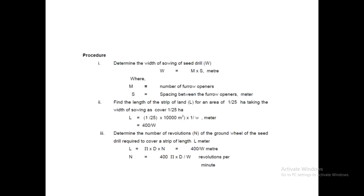Step 1: Determine the width of the seed drill. The width equals m × s meters, where m is the number of furrow openers and s is the spacing between two furrow openers. Step 2: Find the length of the strip of land for an area of 1/25 hectare, taking the sowing width. The length of the strip = (1/25 × 10,000) / w, where w is the total width — so you divide the area of 1/25 hectare by the total width to get the strip length.